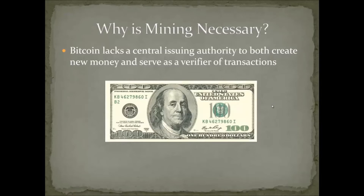Bitcoin has no central issuing authority. As noted in prior lectures, money that enters the system is constrained by algorithms, and new money is not given to any one party — you have to do something to earn it. Mining, in a nutshell, is the process by which new money is created and put into the Bitcoin economy based on merit, and also the process by which transactions are verified.